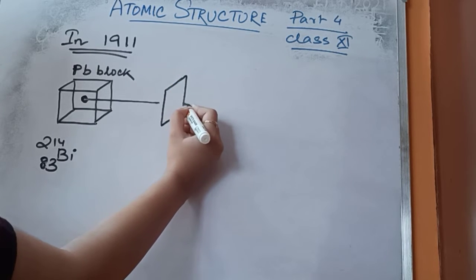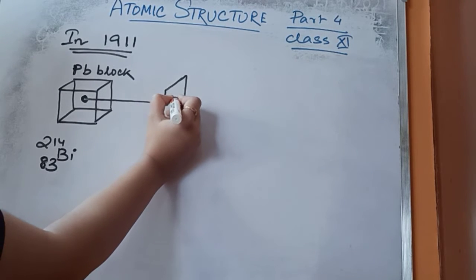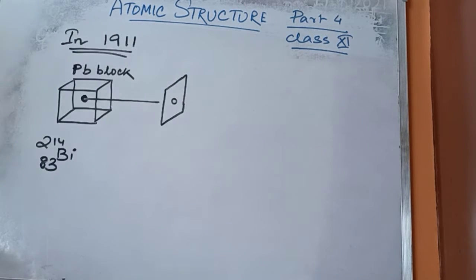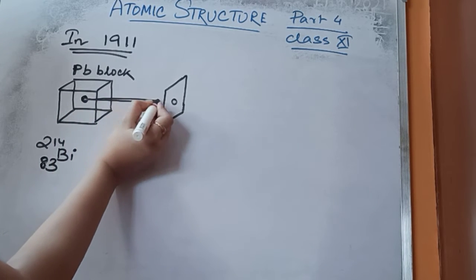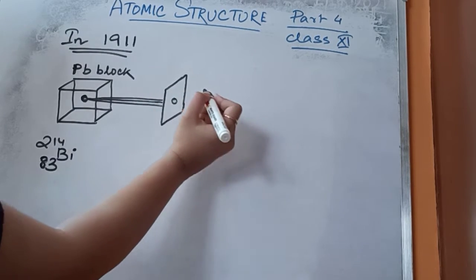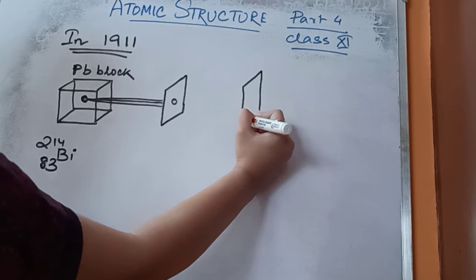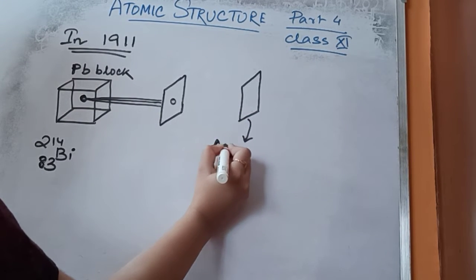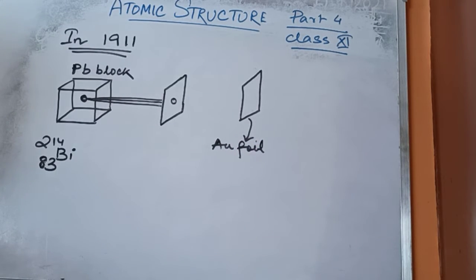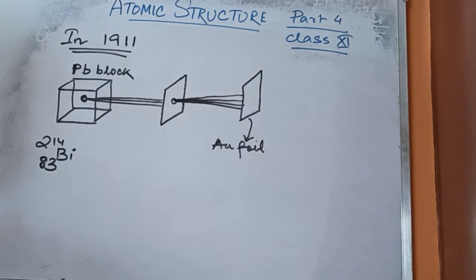He then placed a lead plate with a slit inside it. The alpha particles emitted from the source pass through this slit. After that, he placed a thin gold foil. The alpha particles pass through the slit and get bombarded on this thin gold foil.